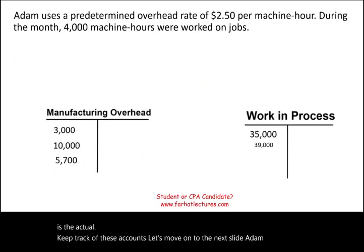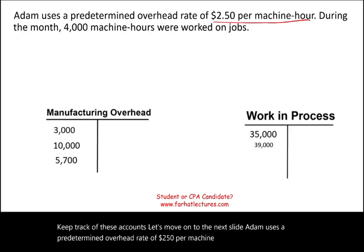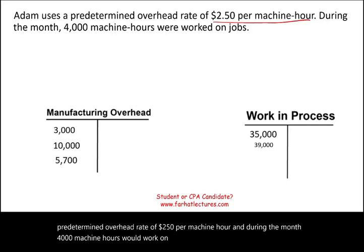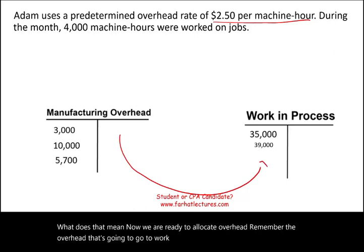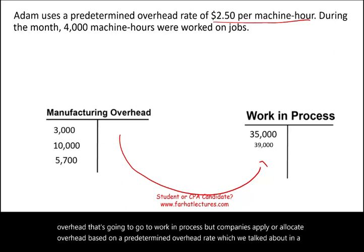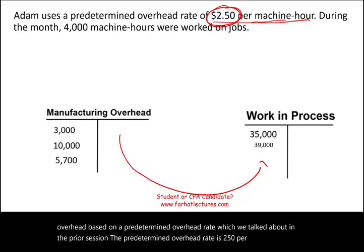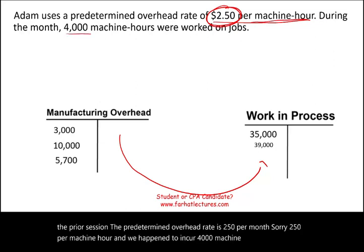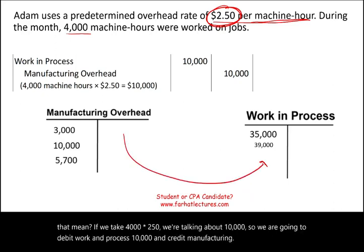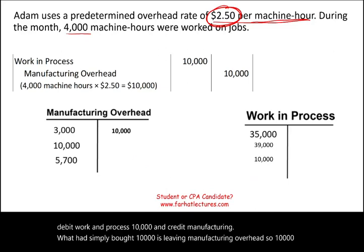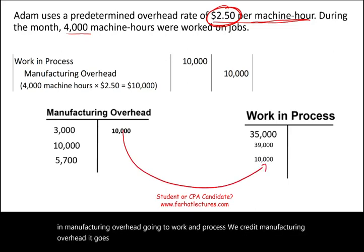Adam uses a predetermined overhead rate of $2.50 per machine hour. During the month, 4,000 machine hours were worked on the jobs. This means we are ready to allocate overhead. Taking 4,000 times $2.50 equals $10,000. We debit work in process $10,000 and credit manufacturing overhead $10,000 — so $10,000 is leaving manufacturing overhead and going to work in process.